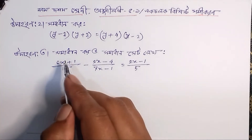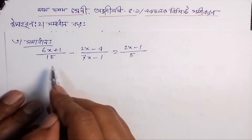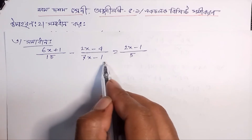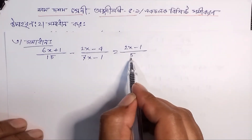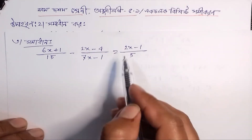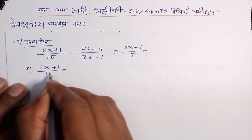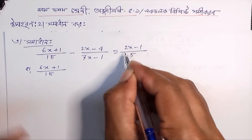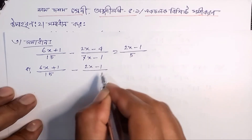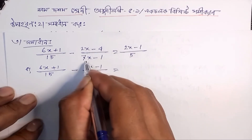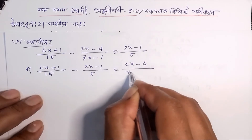We have the second problem. The equation is: (6x+1)/15 minus (2x-4)/(7x-1) is equal to (2x-1)/5. Rearranging: (6x+1)/15 plus (2x-1)/5 is equal to (2x-4)/(7x-1).